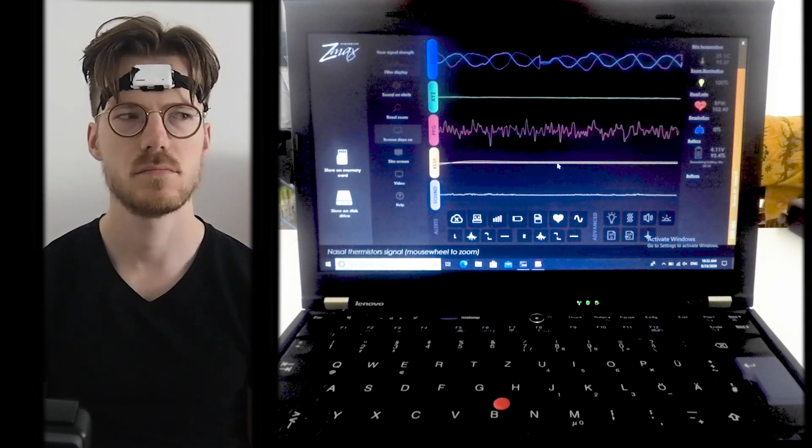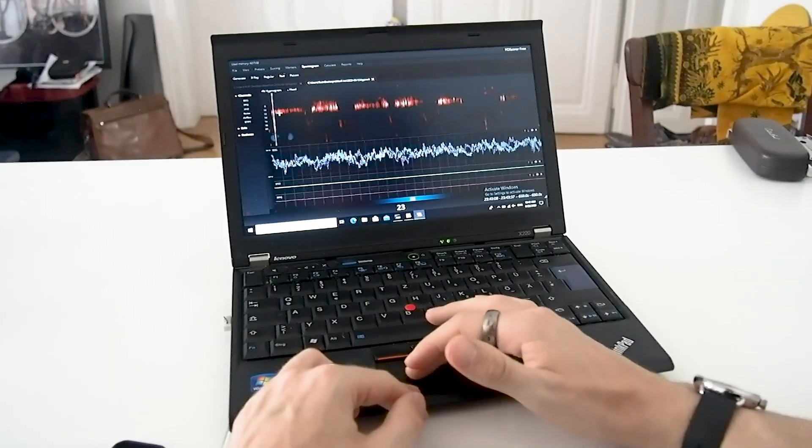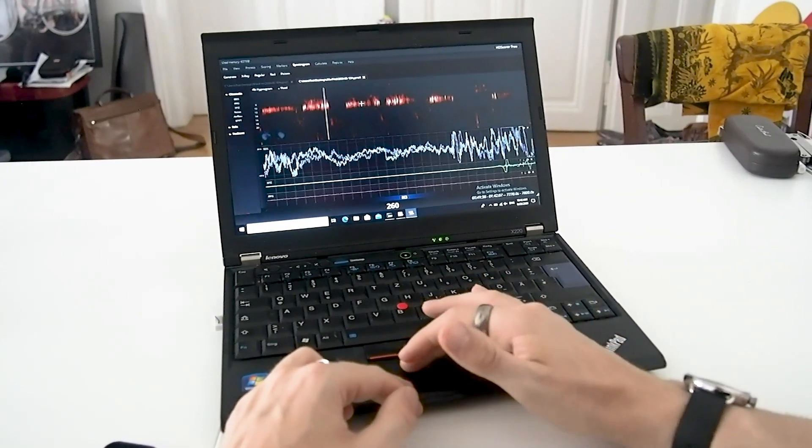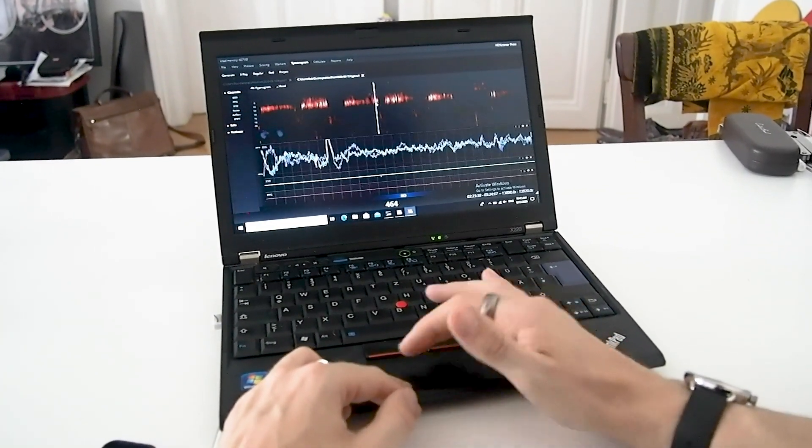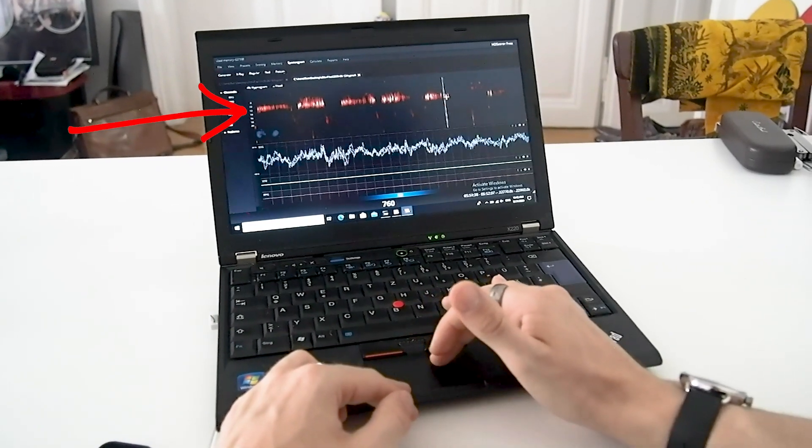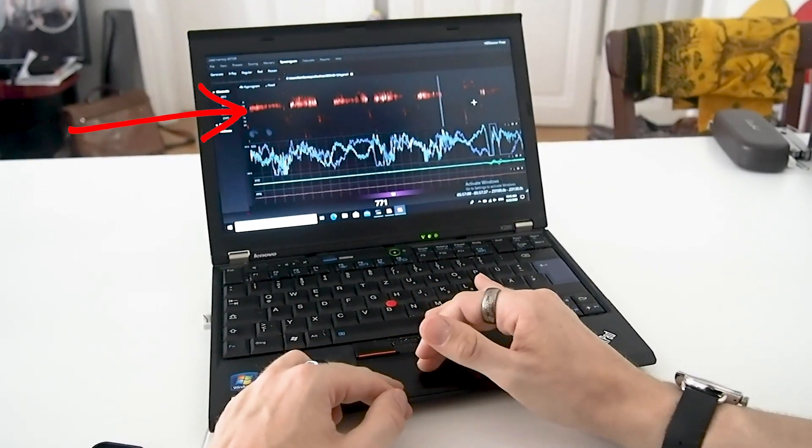To show you why scientists use brain waves to study sleep, here you can see the raw EEG data from one of the nights. I will not go into details but without knowing anything about EEG you can already very clearly see the sleep cycles that I went through. This shows you the power of using EEG for sleep measurements.